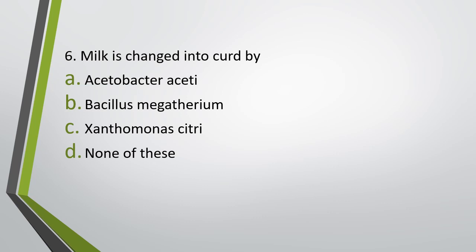Question number six: Milk is changed into curd by — (a) Acetobacter, (b) Bacillus megatherium, (c) Xanthomonas citri, (d) none of these. Correct answer is option D: none of these. The organism that actually converts milk to curd is Lactobacillus.